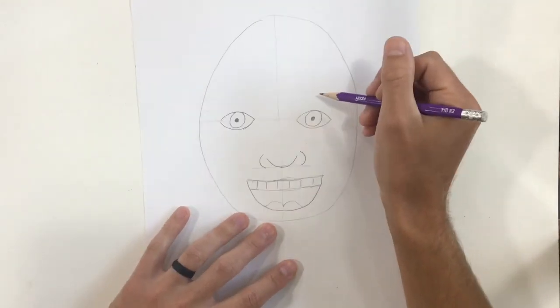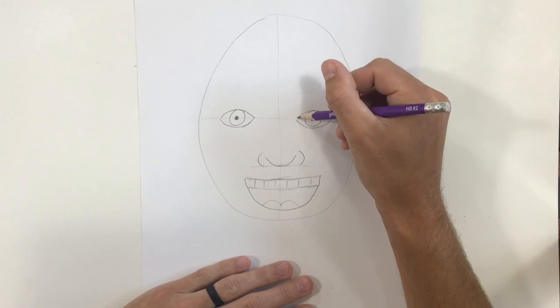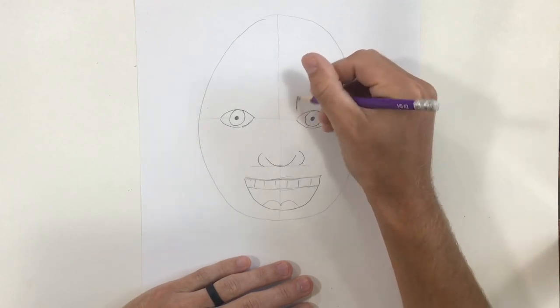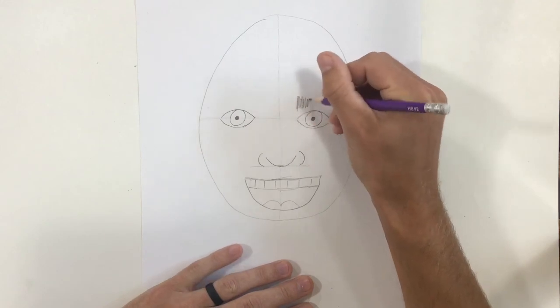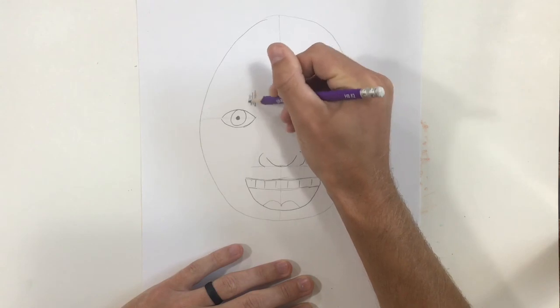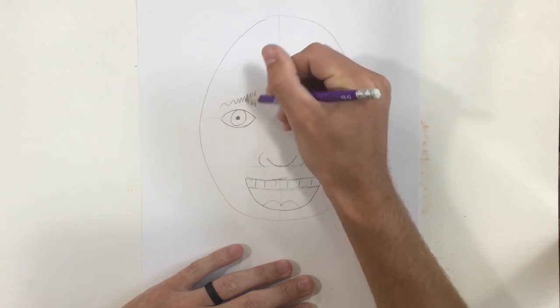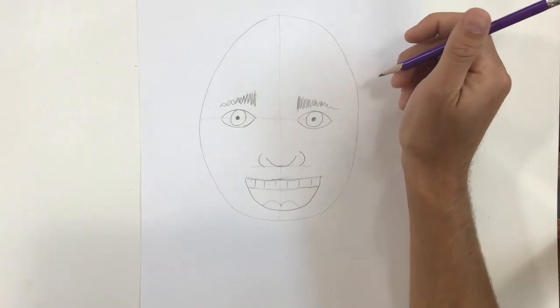Next, I'm going to add my eyebrows. My eyebrows are obviously going to go above my eye. They're not going to touch my eye though. And typically your eyebrows start out kind of big towards the center of your face. And then they get a little bit smaller as they get further out. If you would like to add eyelashes, you can as well. I'm not going to in this drawing.